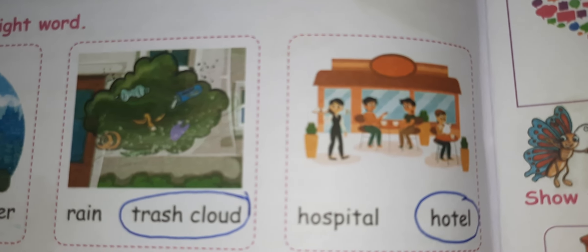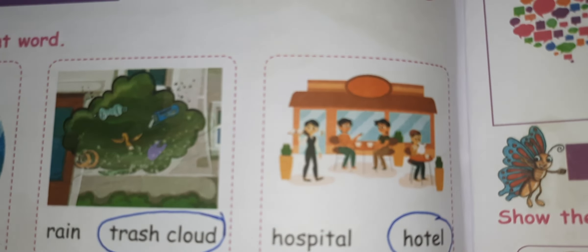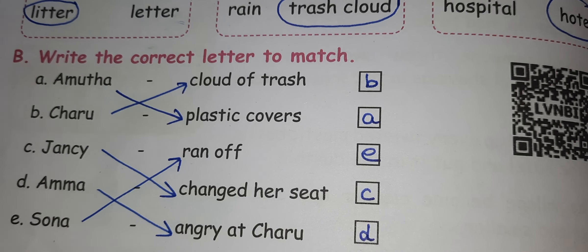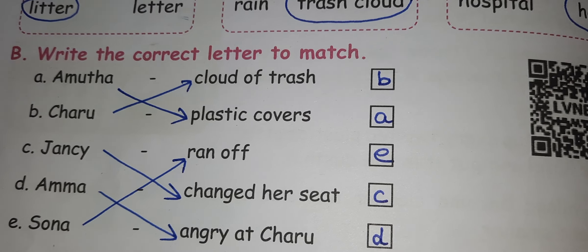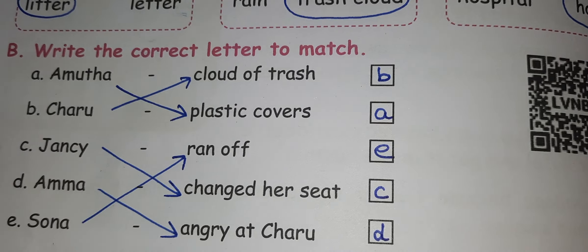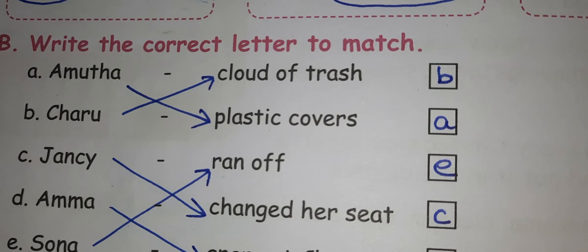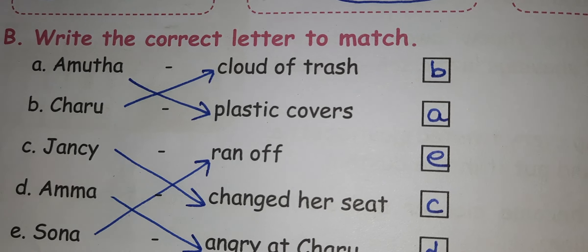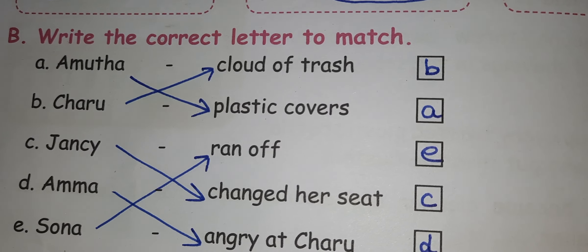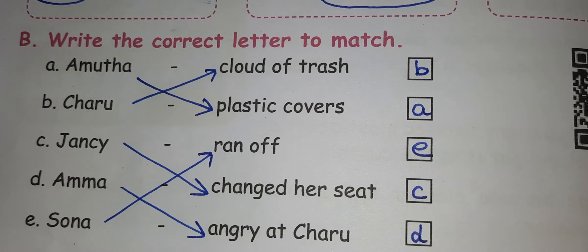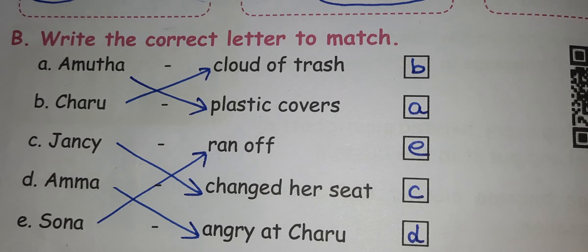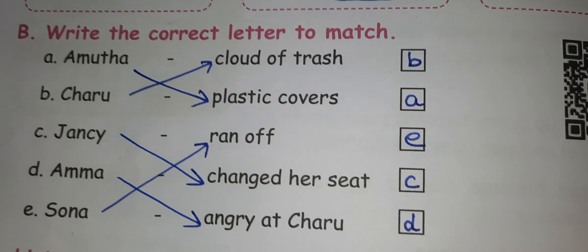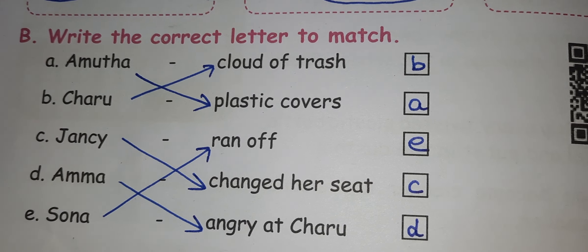B - Write the correct letter to match: Amudha - Plastic covers, Charu - Clouds of Trash, Jansi - Change a Seat, Amma - Angry at Charu, Sona - Runoff. I have written the letter also in that.